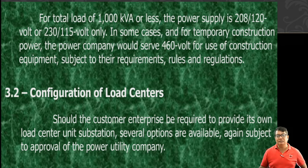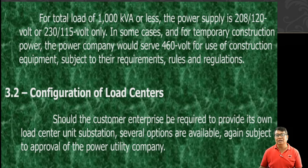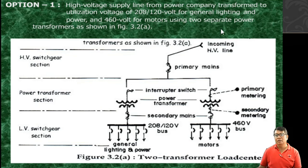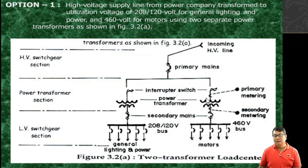For configuration of load centers: should the customer enterprise be required to provide its own load center unit substation, several options are available, subject to approval of the power utility company. Option 1: high voltage supply line from the power company is transformed to utilization voltage of 208/120 volts for general lighting and power, and 460 volts for motors, using two separate transformers as shown in the figure.